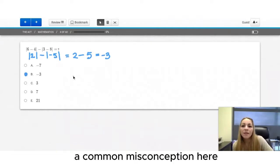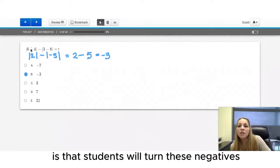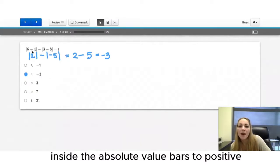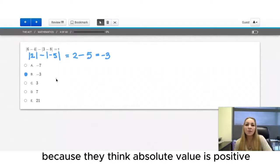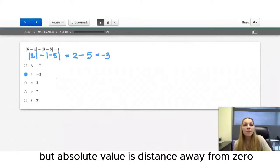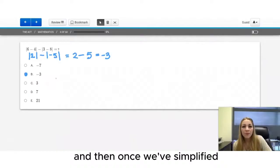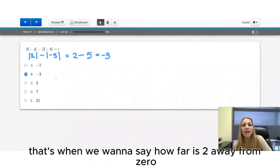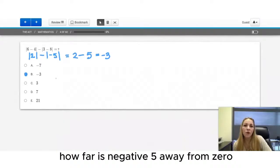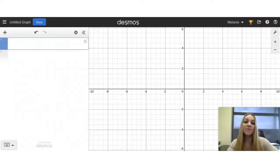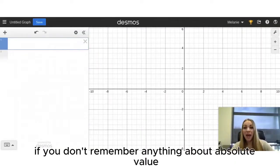A common misconception here is that students will turn these negatives inside the absolute value bars to positive because they think absolute value is positive, but absolute value is distance away from 0. So we want to do the order of operations first. And then once we've simplified, that's when we want to say how far is 2 away from 0? How far is negative 5 away from 0?